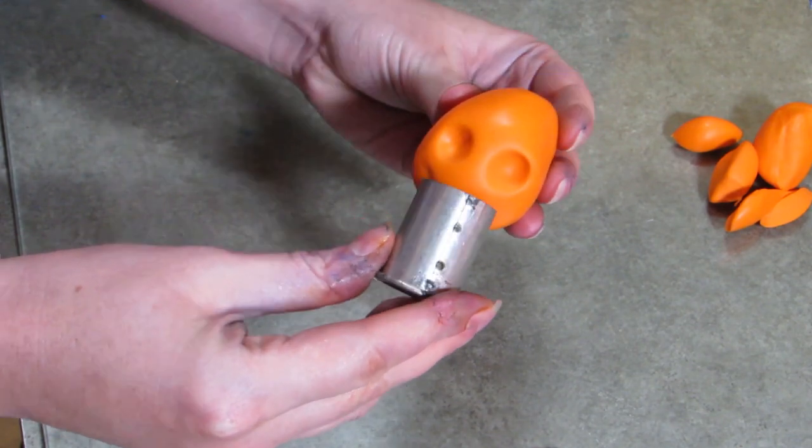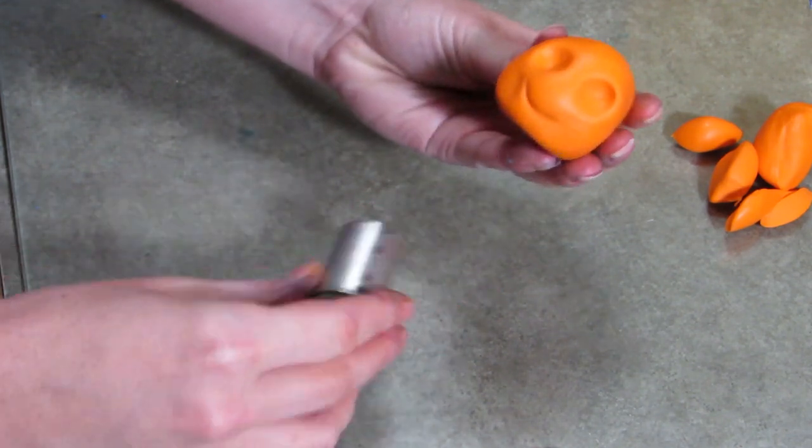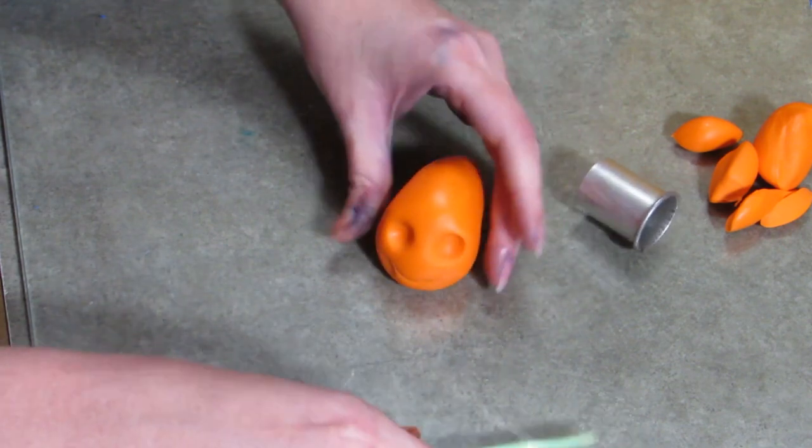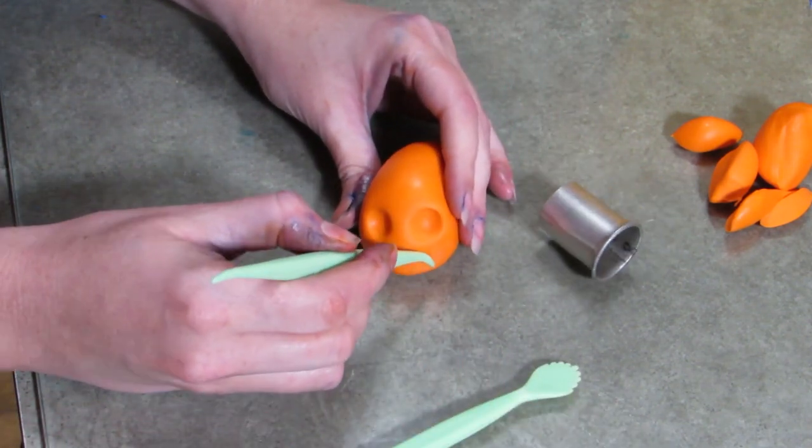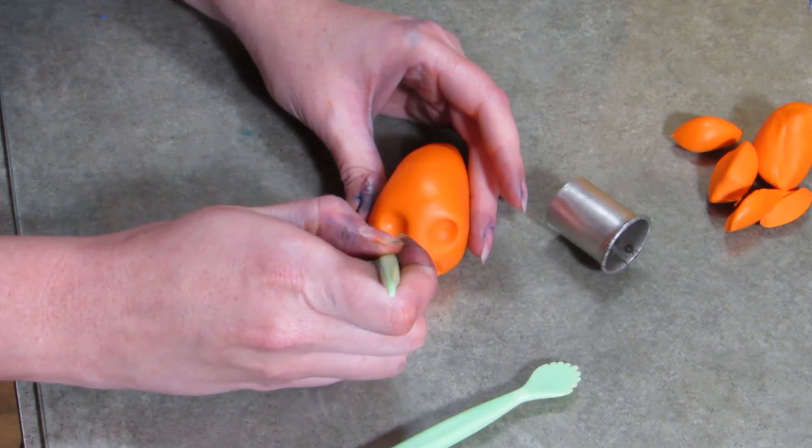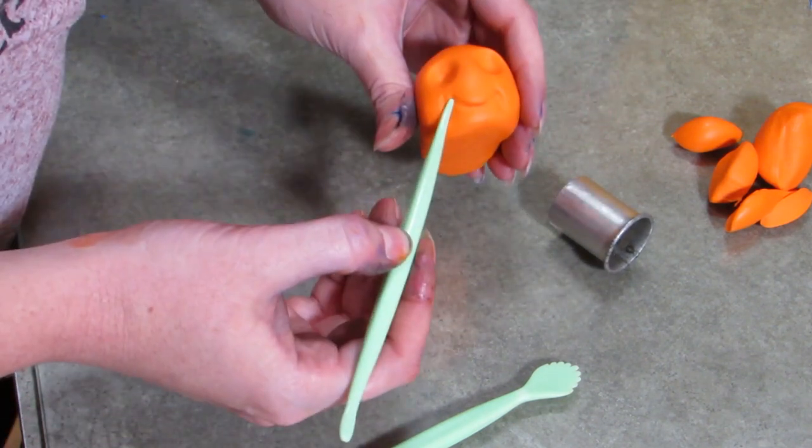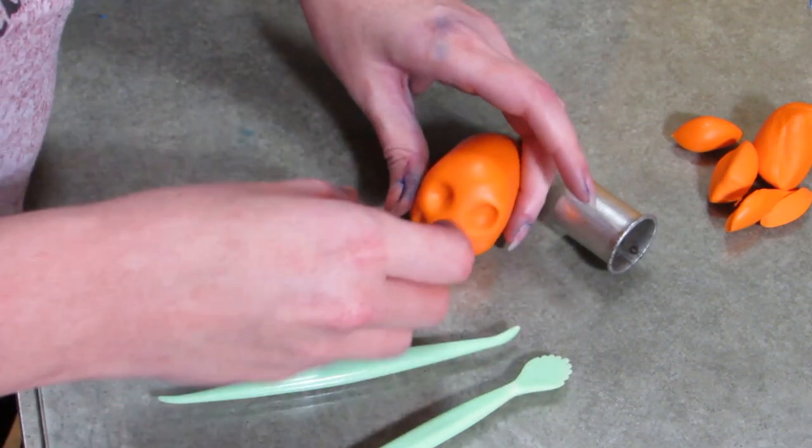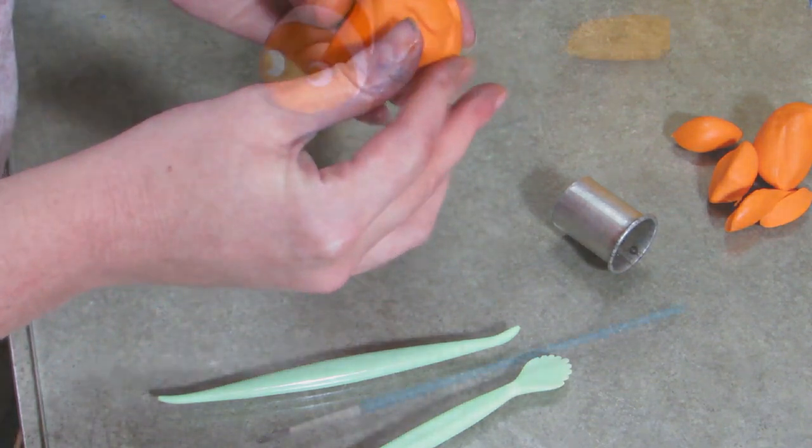Using that circle cutter, I'm just giving him a happy face, because he's happy. They found him, so life is good. Using my little pressy tool, I'm just kind of accenting it, giving him a little more happiness, a little more cheekbone kind of look. Little chubby cheeks. He's a little happy fish.